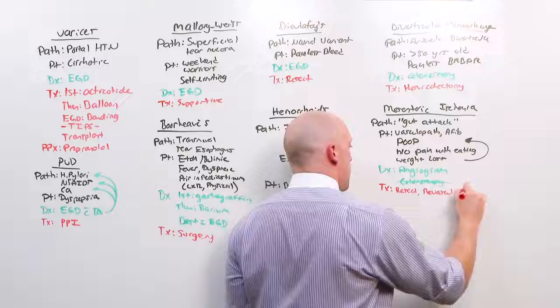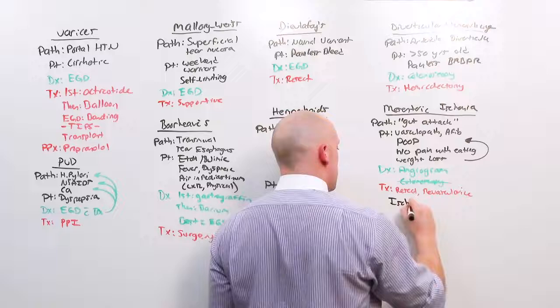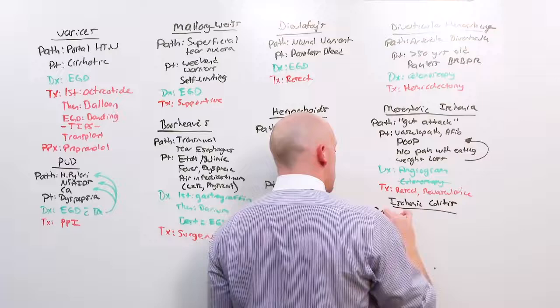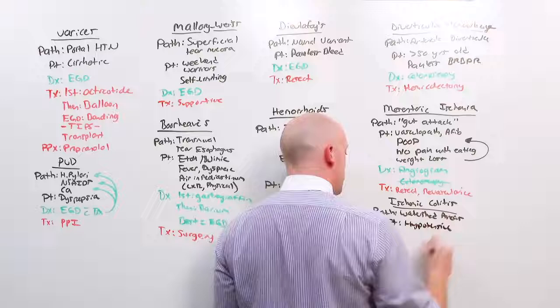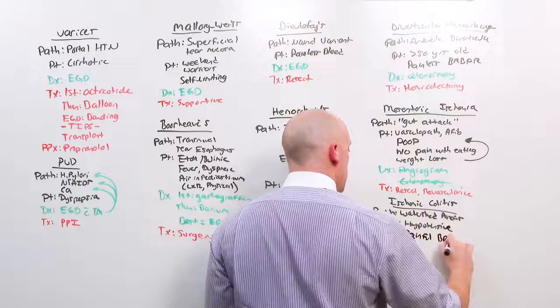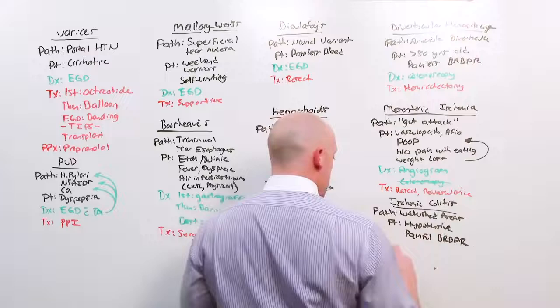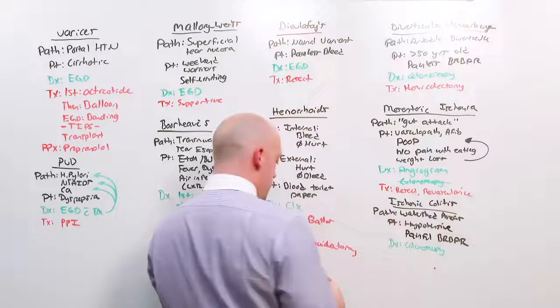This is very different from ischemic colitis. Ischemic colitis occurs at the watershed areas. That is, a patient gets hypotensive for another reason, and then they get a painful bright red blood per rectum. Painful because bowel is dying. Diagnosis is made with colonoscopy, much in the same way as we just discussed. If you see dead tissue on colonoscopy, the tissue has already taken the hit, and the treatment is supportive.